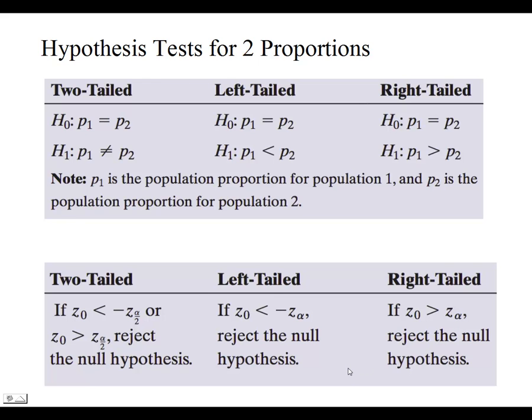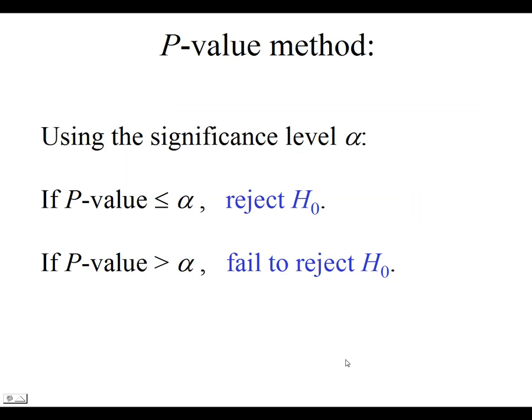In all of the cases, we will fail to reject the null. And finally, our p-value method is the same as it always has been. If our p-value is less than or equal to alpha, we will reject the null. If it's greater than alpha, we will fail to reject the null. When you run the test on the calculator, it will give you both the test statistic and the p-value. So you should be able to calculate the conclusion from there.